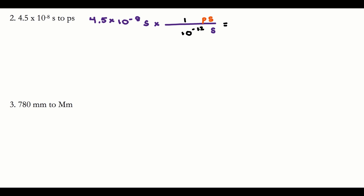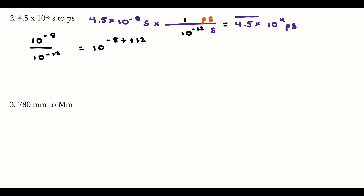You can plug this into your calculator, or work it out: the answer will be 4.5 times 10 to some power. I'm taking 10 to the negative eighth and dividing by 10 to the negative 12. When dividing powers of 10, subtract the exponents: negative eight minus negative twelve equals negative eight plus twelve, which gives four. So the answer is 4.5 times 10 to the fourth picoseconds. Sig fig check: 4.5 has two sig figs, units are included — good to go.